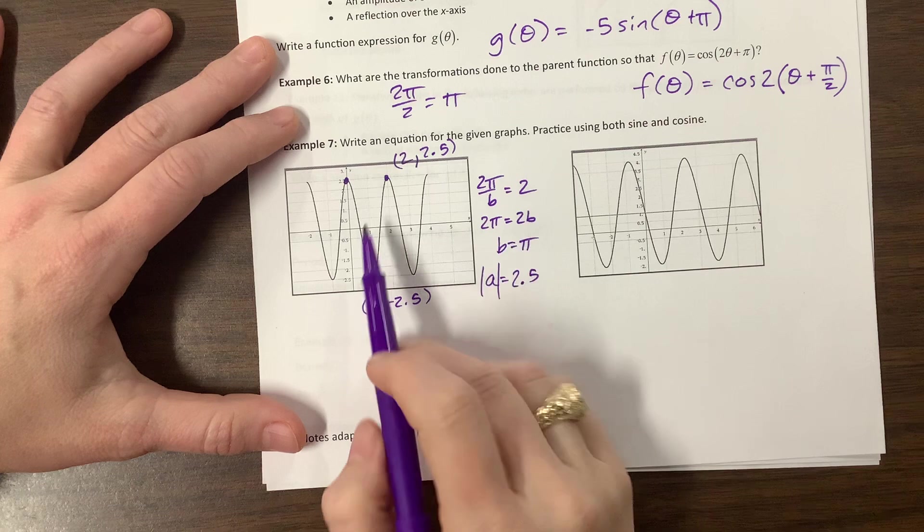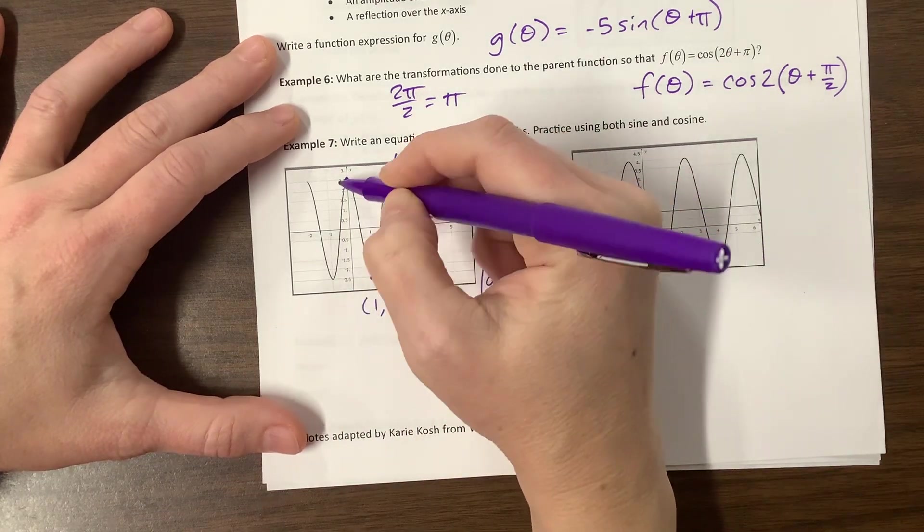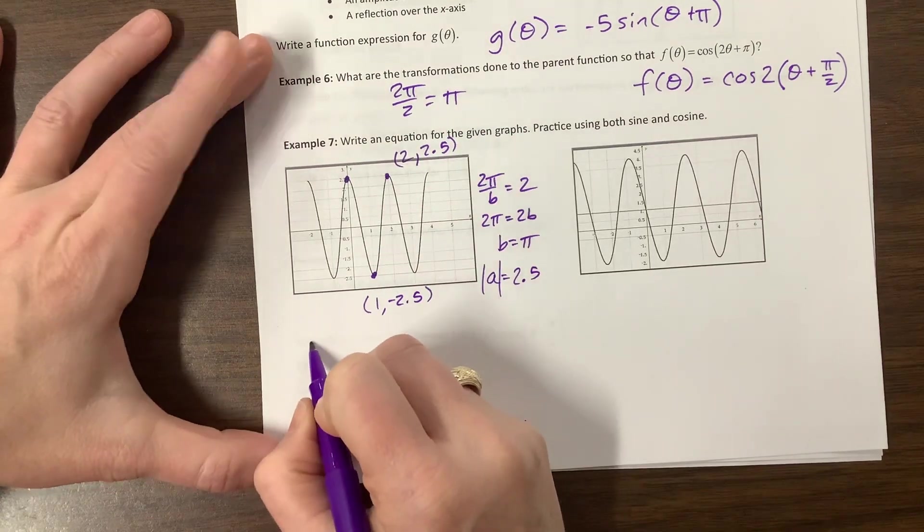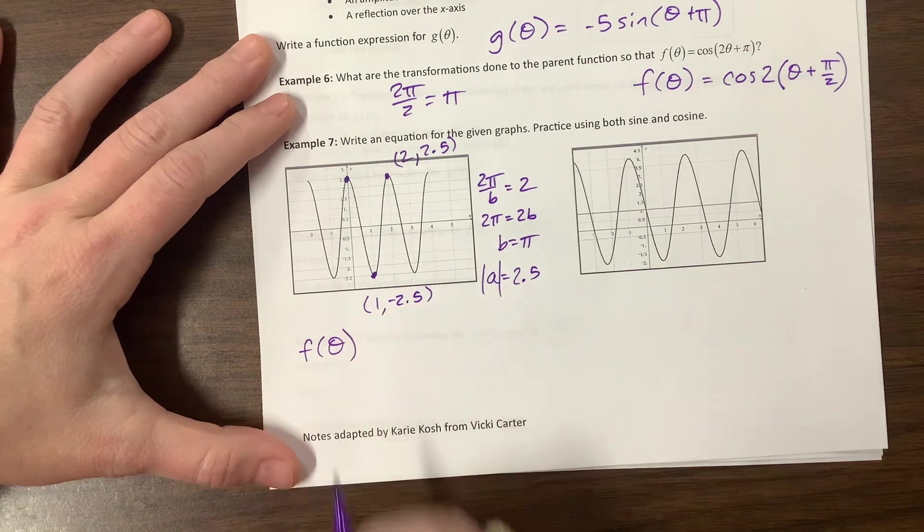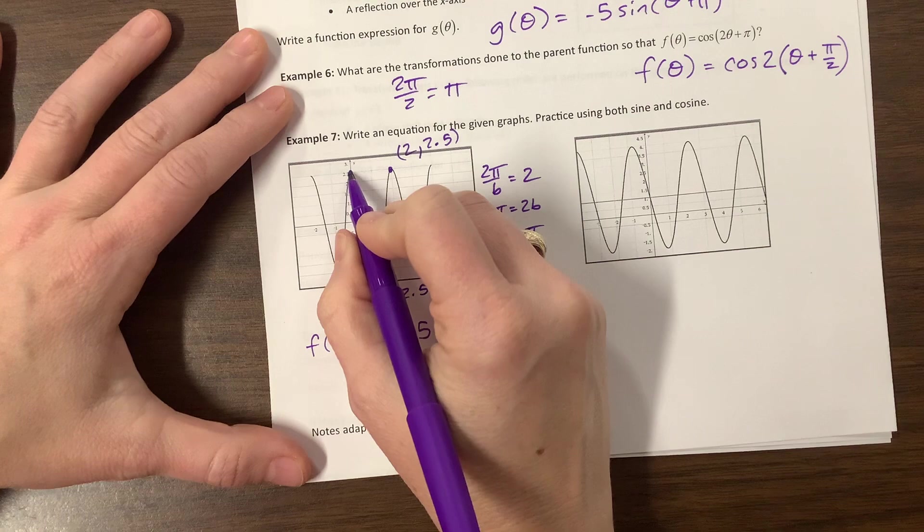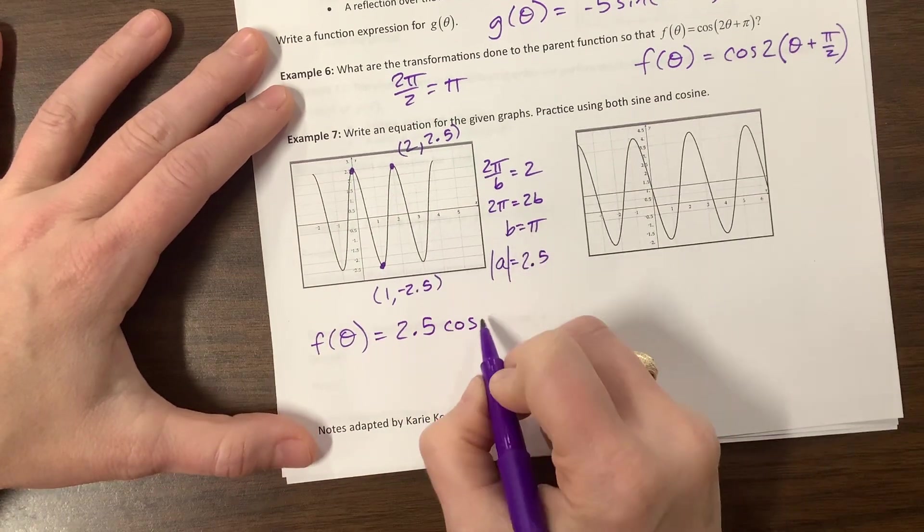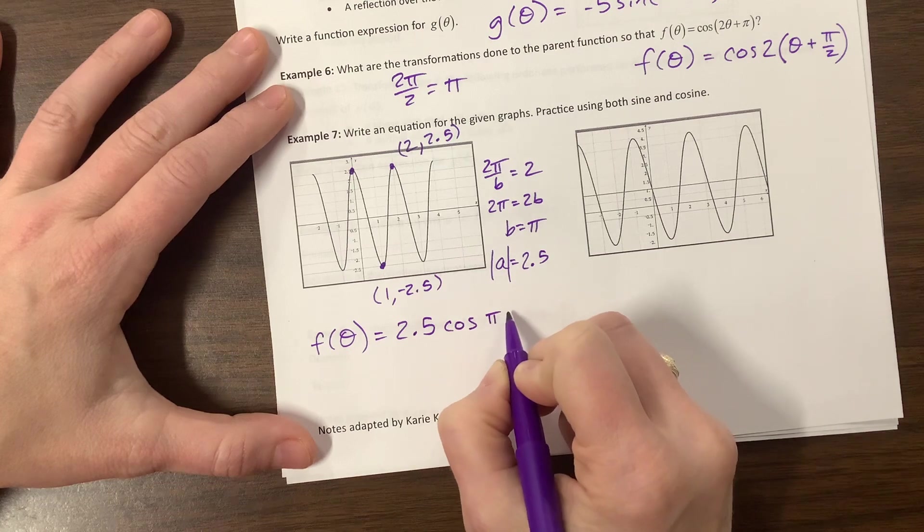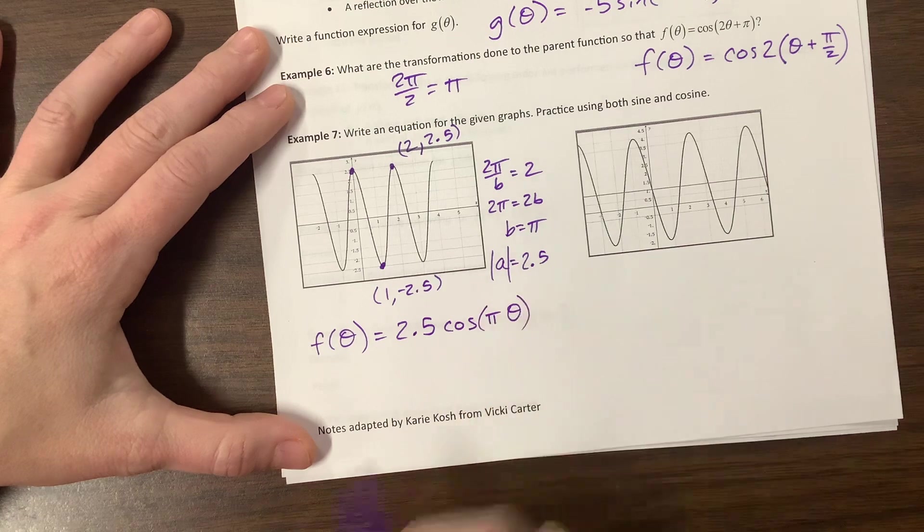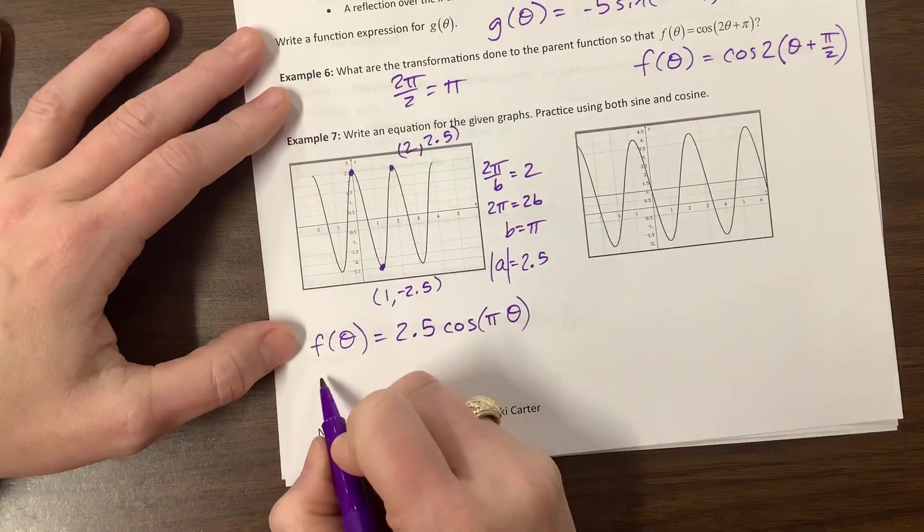And then on this one, if I think of this as my little cosine piece, and it starts here and does that, cosine always starts at the top and does this. So my one equation I could write is that f of theta, we'll practice using theta even though that's not in my nature, is a positive 2.5 since it starts at the top, times cosine of the b value was pi times theta. And we didn't have a shift left or right, and we didn't have a shift up or down. That's the cosine value.